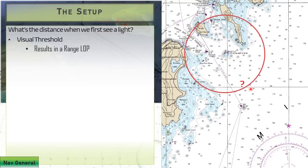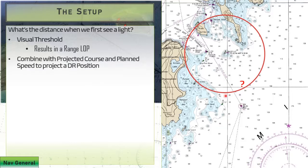The answer to this question is the visual threshold of the light. It's going to be some kind of line of position, a range. If we have this positional information, we can use it to combine with our plotting. If we're doing dead reckoning, we can anticipate what our position will be when we reach that visual threshold.